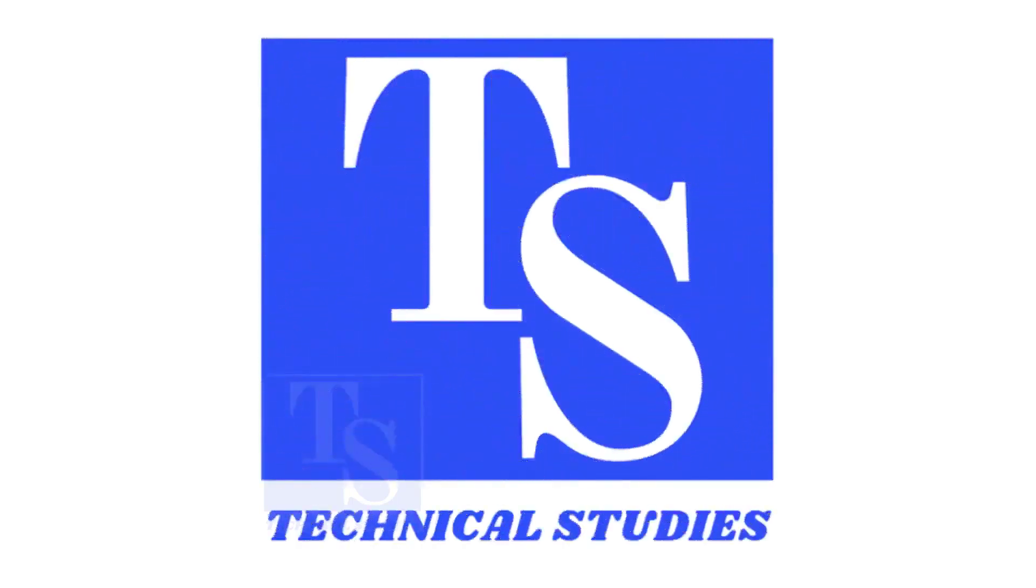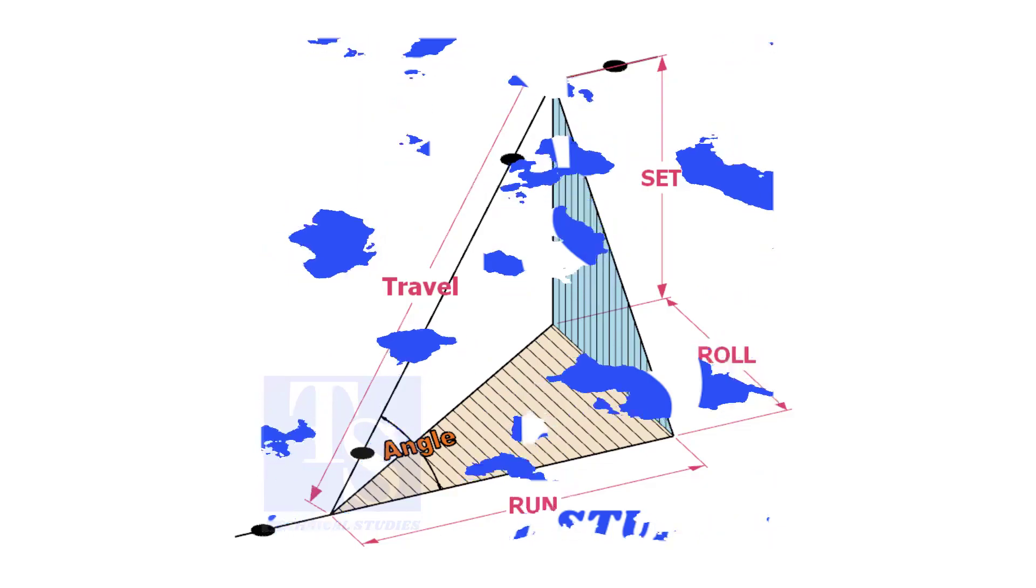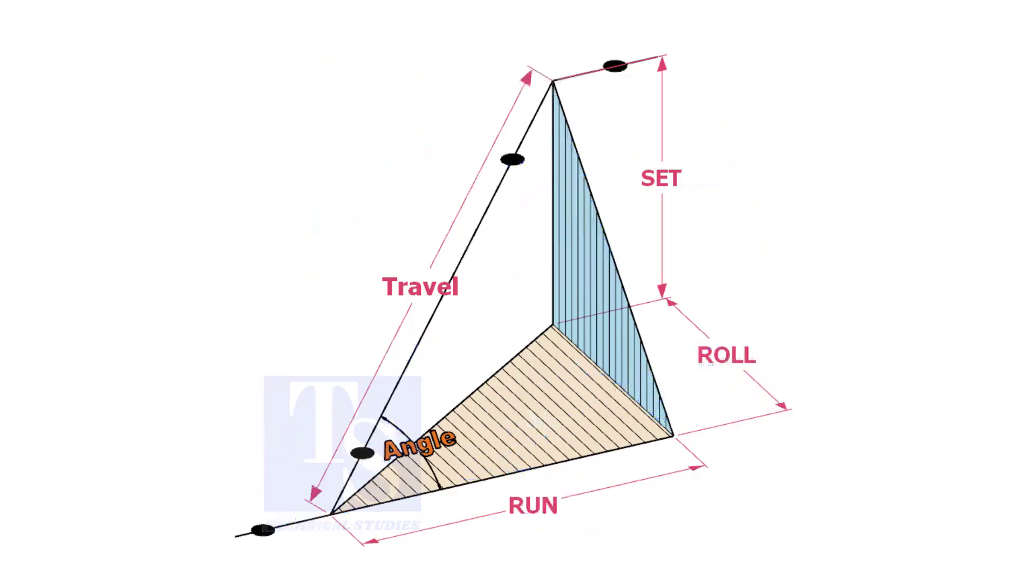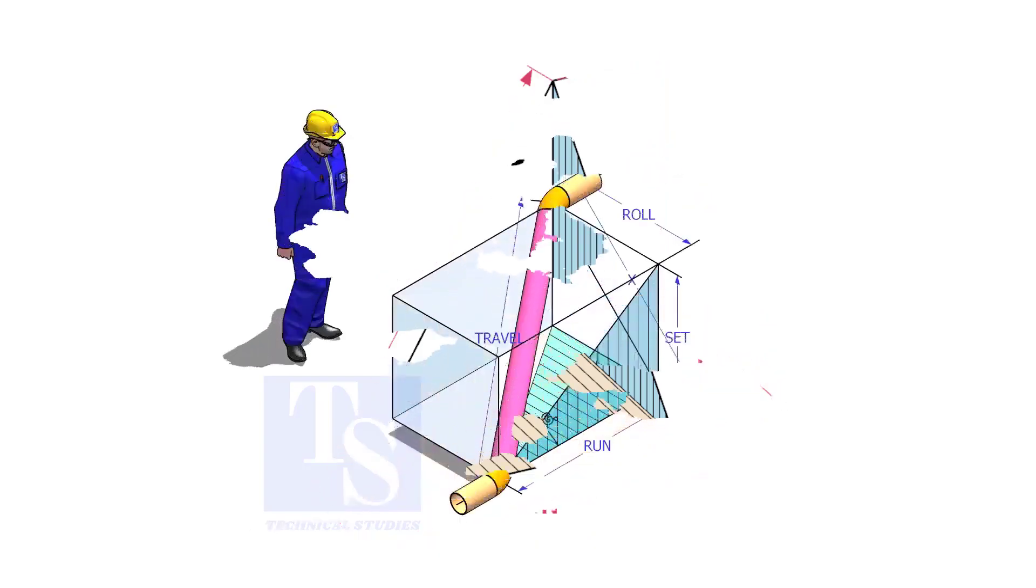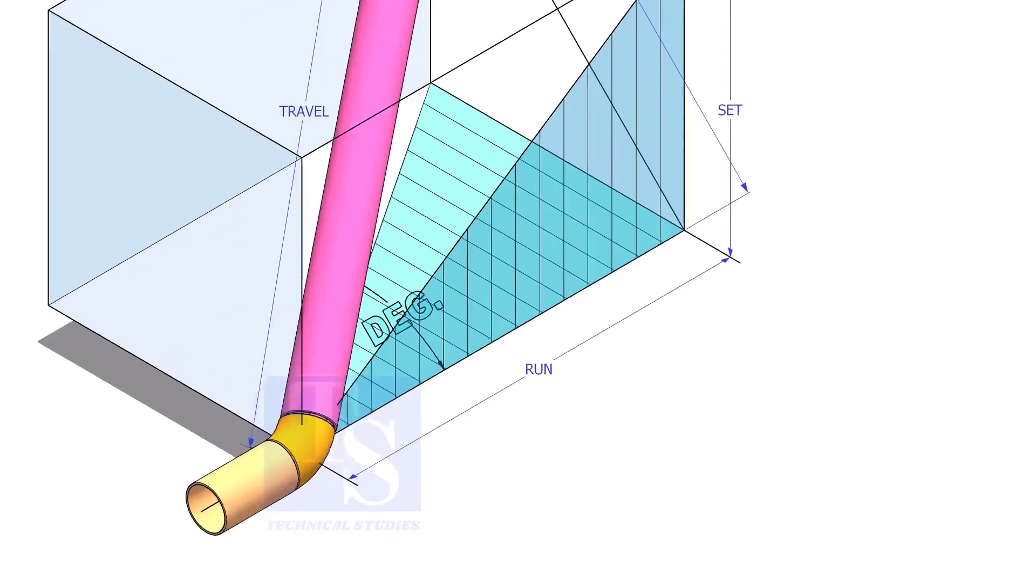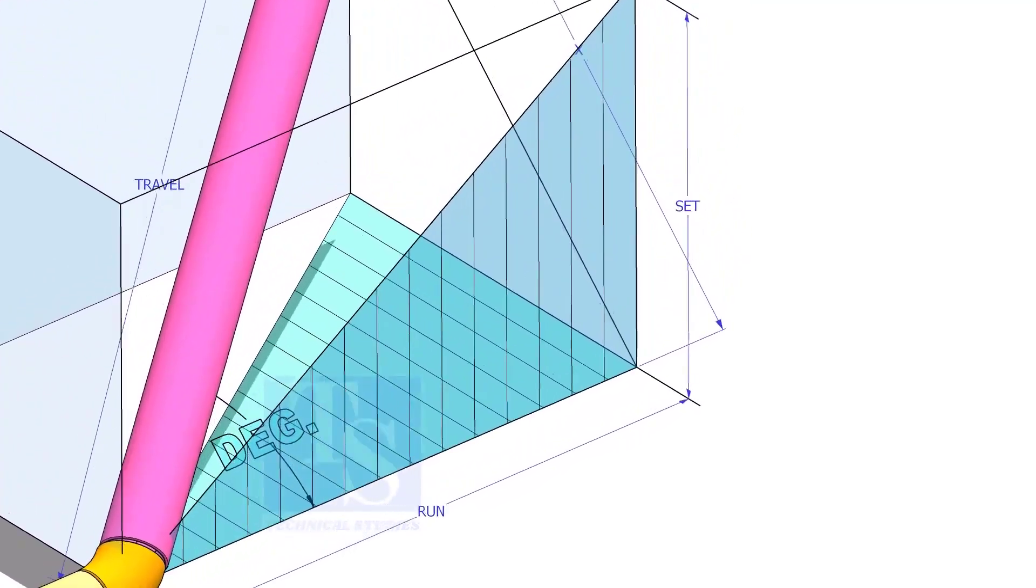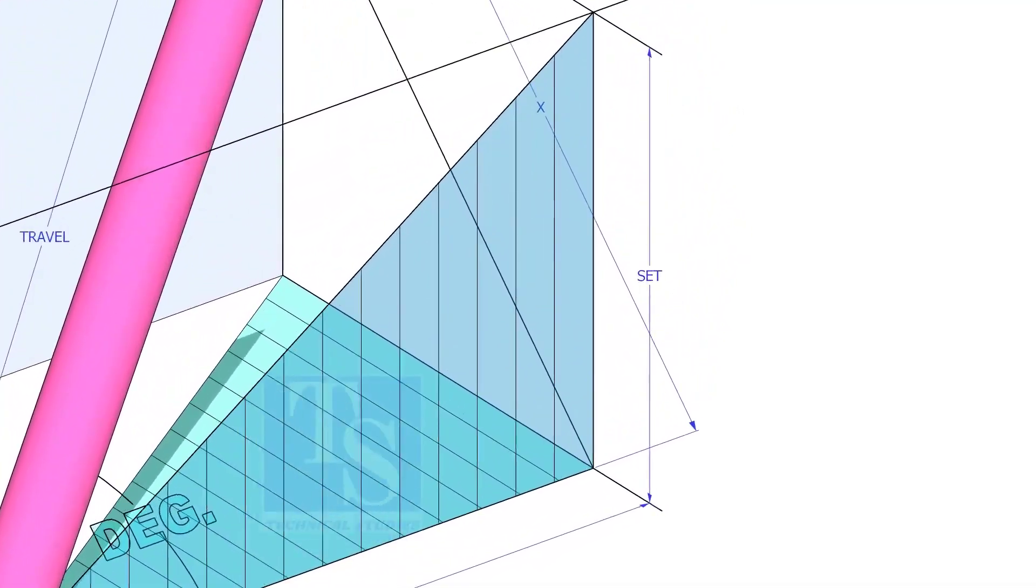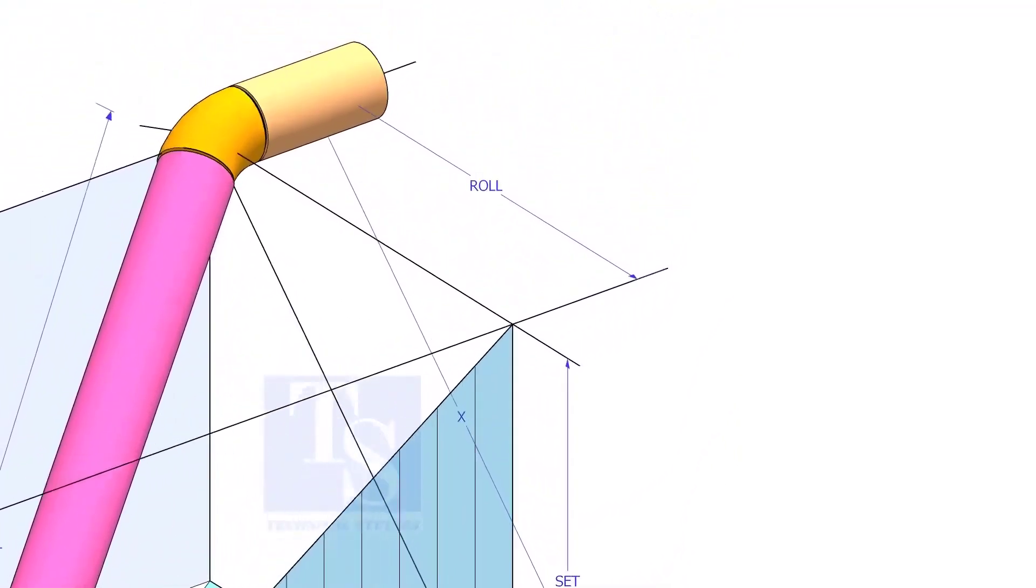Welcome to technical studies. In a piping drawing of a double rolled offset, usually the dimensions of the run, set, and roll are given. In this video, I will show you how to calculate the travel length and the including angle of a double rolled offset pipe.